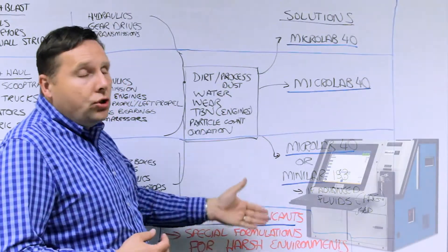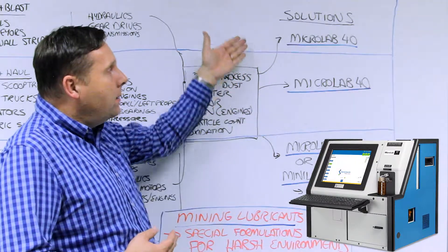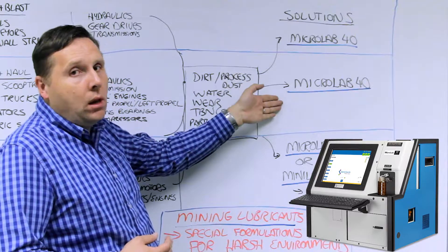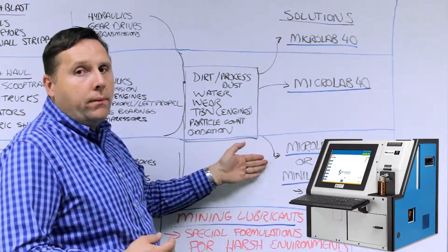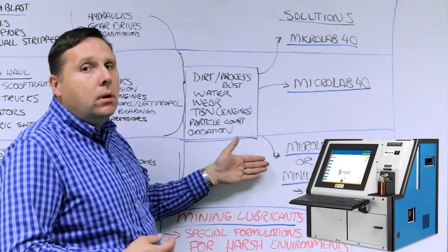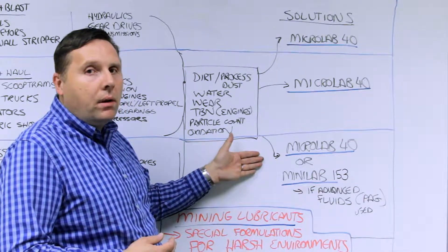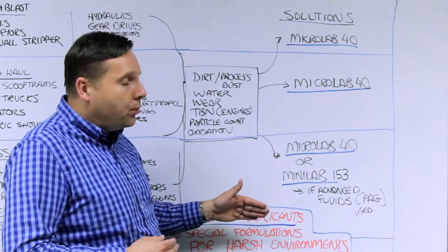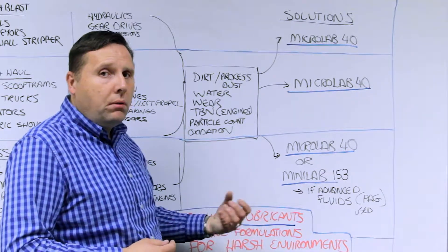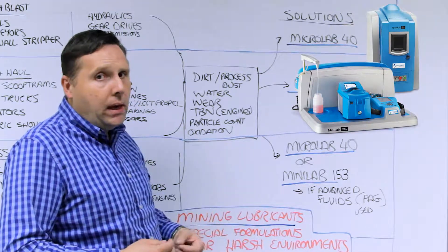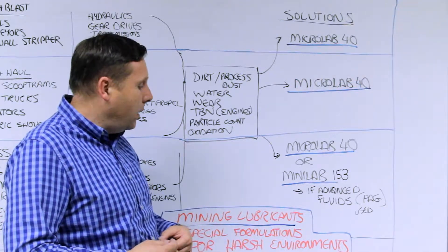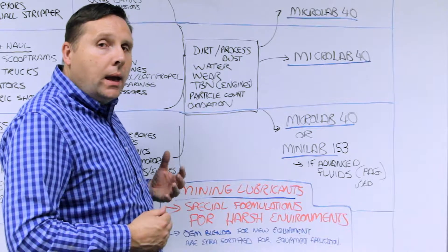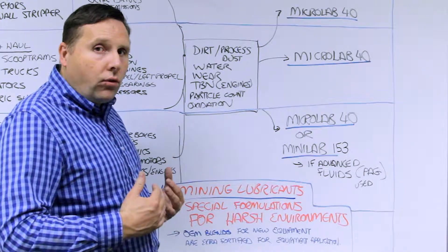The major solutions that we propose out there: the Microlab 40 is excellent for both the blast and drill systems as well as the load and haul systems. Also does a great job for fairly simple mill plants where the equipment there is fairly constant. There are some sites that you might have exotic materials or exotic lubricants present, like PAGs or certain areas of the world. In those cases, talk to us because a Minilab solution might be a better case than that.